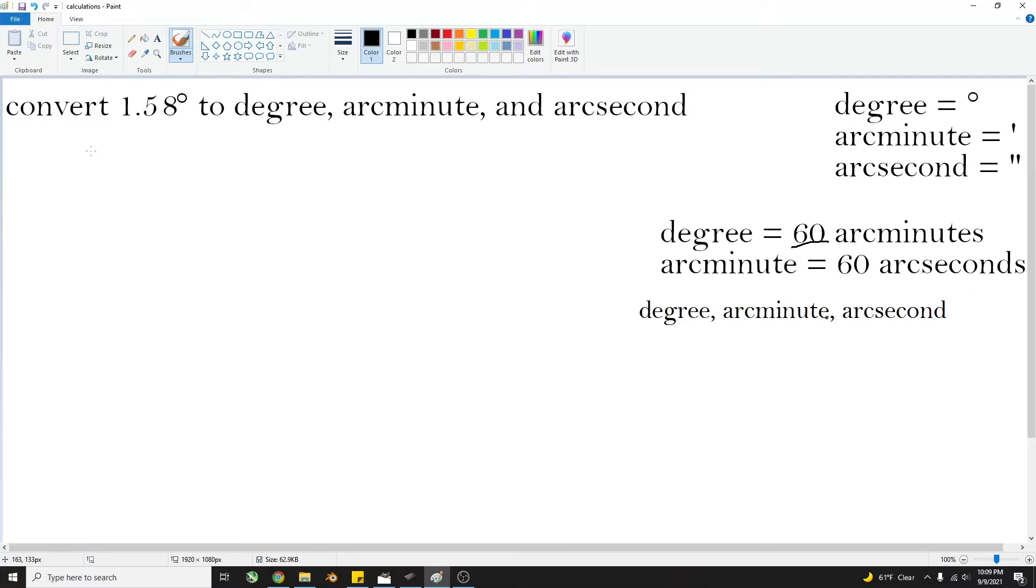So the first thing we're going to do, we're going to take 1.58 degrees. And what you want to do is you want to separate from the decimal point over, and just take the 1. So if you take the 1, we're going to keep that as degrees.